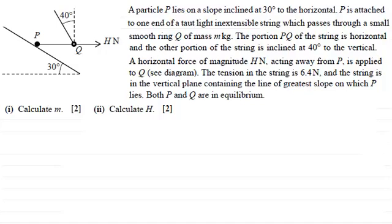Welcome back if you had a go. The first thing I'd want to do in a problem like this is to draw on the forces acting on the ring Q. Now we're told its mass is m, that's what we've got to find out. So its weight will act downwards and that would be mg newtons.